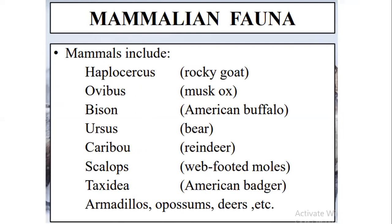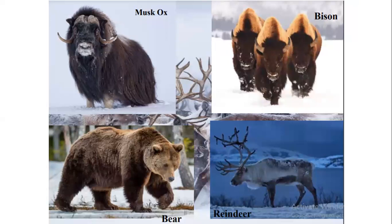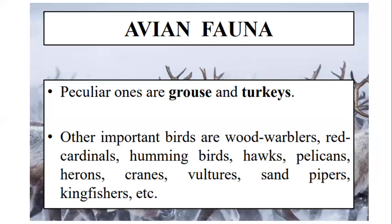Some common mammals present in this region include the Rocky Mountain goat, musk ox, American buffalo, bear, wapiti, wide-footed moles, moles, American beaver, armadillo, opossum, and deer. As you can see on the screen, these organisms are common to this region and they can tolerate the low temperatures, so they can survive here.